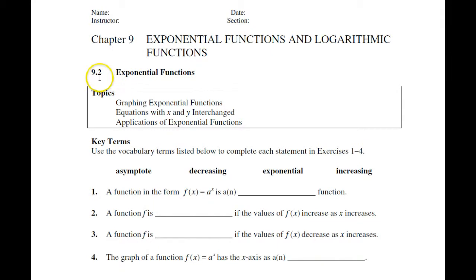Going on now to Topic 2 of Chapter 9, Exponential Functions. Our four key words: asymptote, decreasing, exponential, increasing.